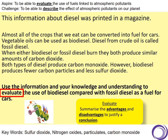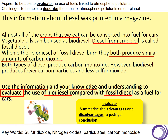Now that we've got the command word, let's underline some key points. The question asks you to use the information and your own knowledge and understanding to evaluate the use of biodiesel compared with fossil diesel as a fuel for cars. Almost all of the crops that we eat can be converted into fuel for cars. Vegetable oils can be used as biodiesel, and diesel from crude oil is called fossil diesel. When either biodiesel or fossil diesel burn, they both produce similar amounts of carbon dioxide.